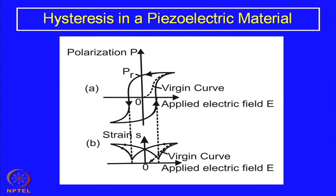Coming back to hysteresis: we have discussed why hysteresis comes up — the basic origin of the hysteresis curve or polarization versus electric field curve. It is basically because of the domain structure. Since piezoelectric materials are also ferroelectric, we have a domain structure and a hysteresis curve. This hysteresis curve is a very typical characteristic of piezoelectric material, as in the case of ferroelectric material, because they have ferroelectricity in them.